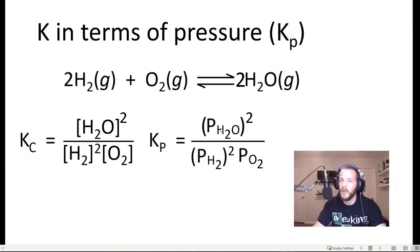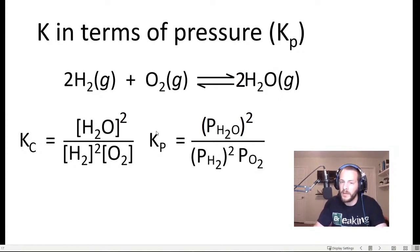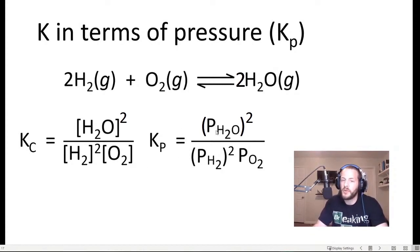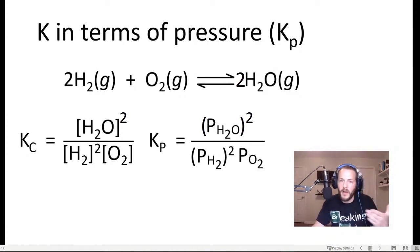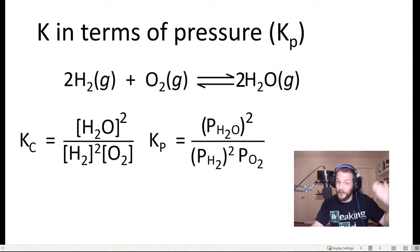So P sub H2O, P sub O2, P sub H2 — P sub whatever — just means the partial pressure of that component. So if we wanted the equilibrium constant with respect to pressure, that would be the partial pressure of water divided by the partial pressure of hydrogen squared times the partial pressure of oxygen. It's basically the same thing as the equilibrium constant with respect to concentration — the law of mass action: products raised to their coefficients divided by reactants raised to their coefficients.